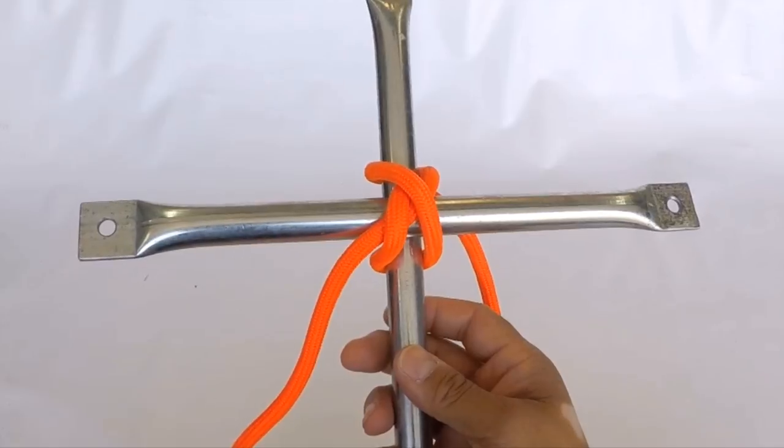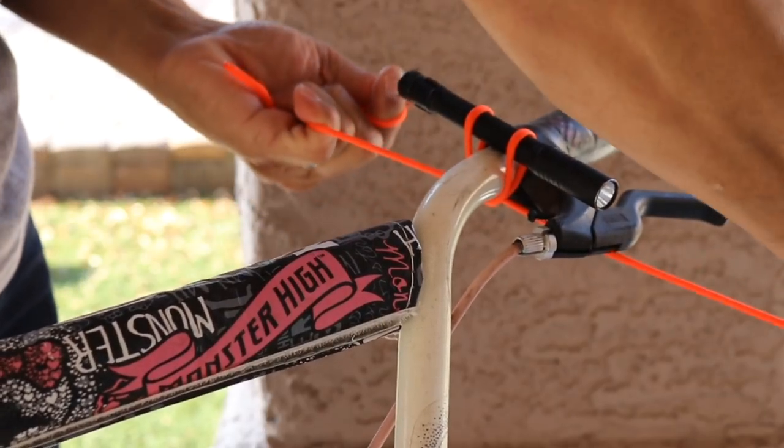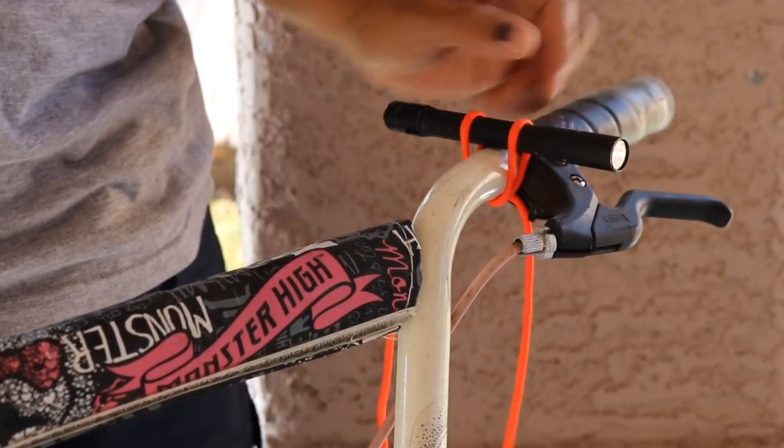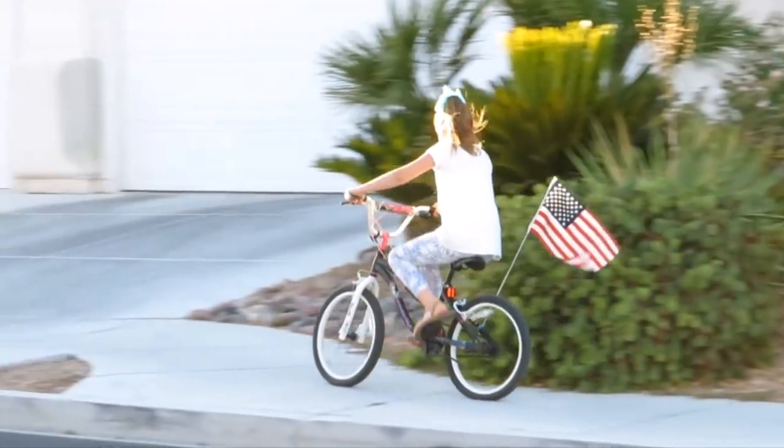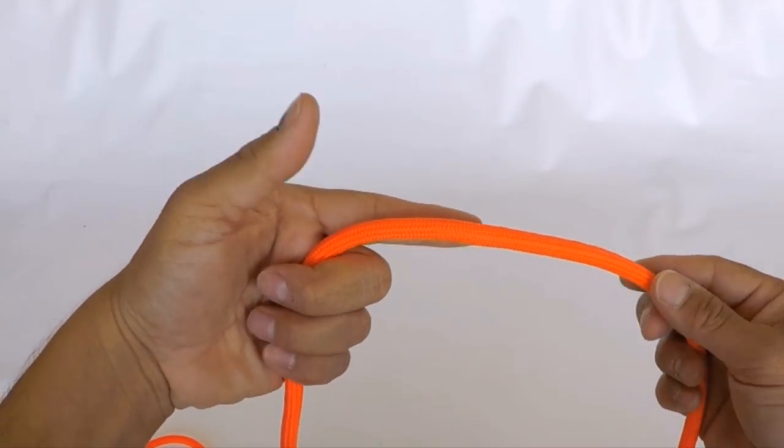This used to be used for making kites back in the old days, but today we just use it to tie flashlights to handlebars or even flags to bicycles.